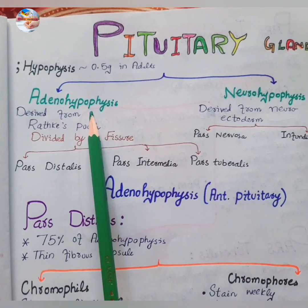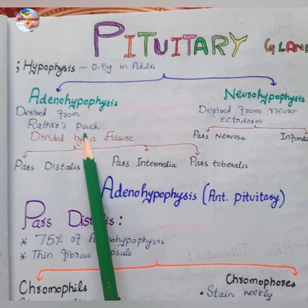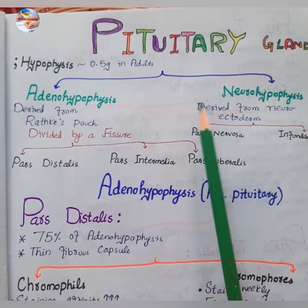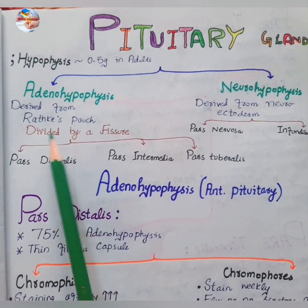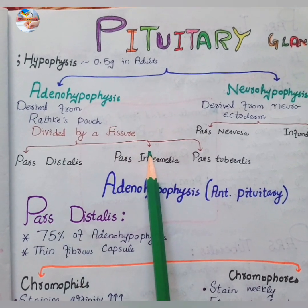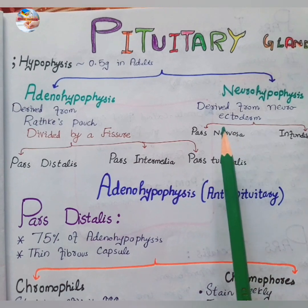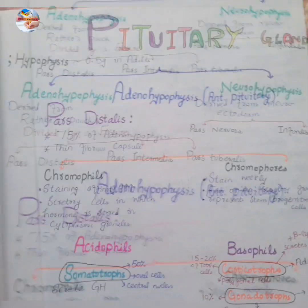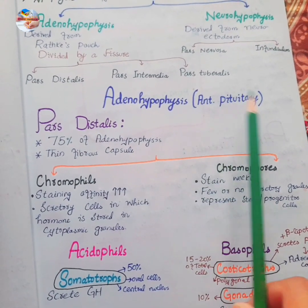The anterior pituitary or adenohypophysis is derived from Rathke's pouch, which is a derivative of the oral ectoderm. The neurohypophysis is derived from the neuroectoderm. The adenohypophysis is divided by a fissure into three parts: the pars distalis, pars intermedia, and pars tuberalis. The neurohypophysis is divided into two major parts: the pars nervosa and the infundibulum.